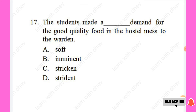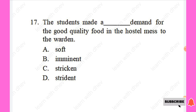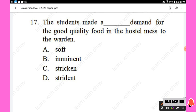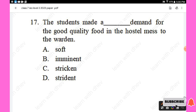Question 17: The students made a — demand for good quality food in the hostel, raised to the warden. Options are: soft, eminent, stricken, strident. The right answer is 'strident' — the students made a strident demand for good quality food. Option D is the right answer.